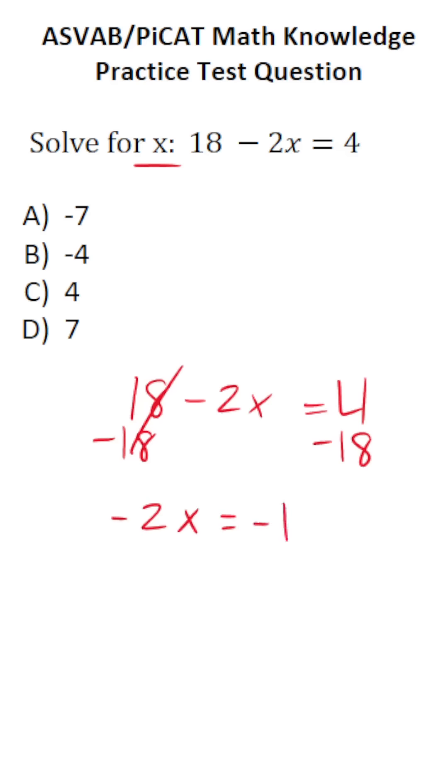4 minus 18 is negative 14. To get x by itself, we're going to divide both sides by negative 2. This crosses out, leaving you with x over here.